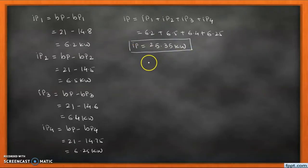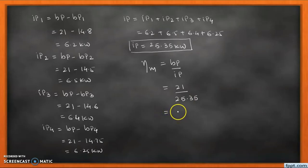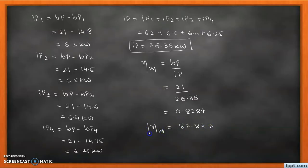On the basis of indicated power and brake power, we calculate mechanical efficiency. Mechanical efficiency = brake power divided by indicated power = 21 divided by 25.35 = 0.8284, which means the efficiency in percentage is 82.84%. That is the mechanical efficiency of this engine.